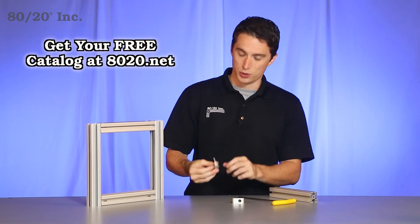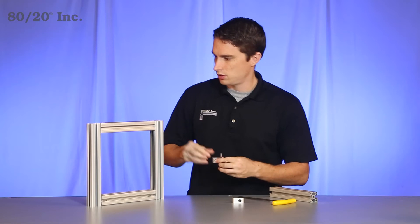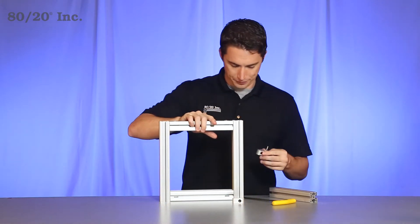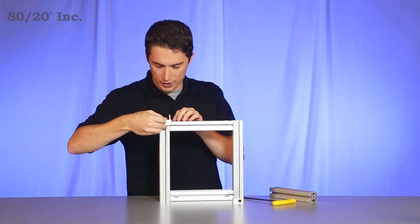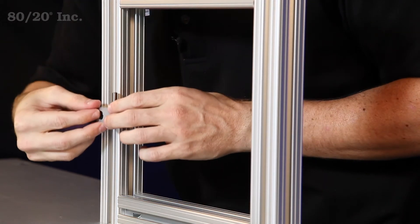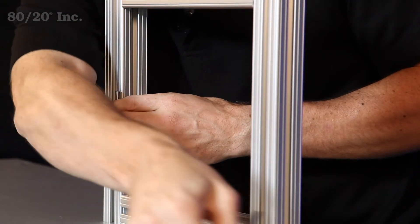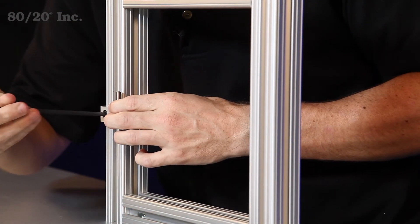So to get started we're going to loosen up our T-nut on the hinge, grab our frame, and we'll install one half of the hinge onto the frame. We'll go ahead and tighten that down with our wrench.